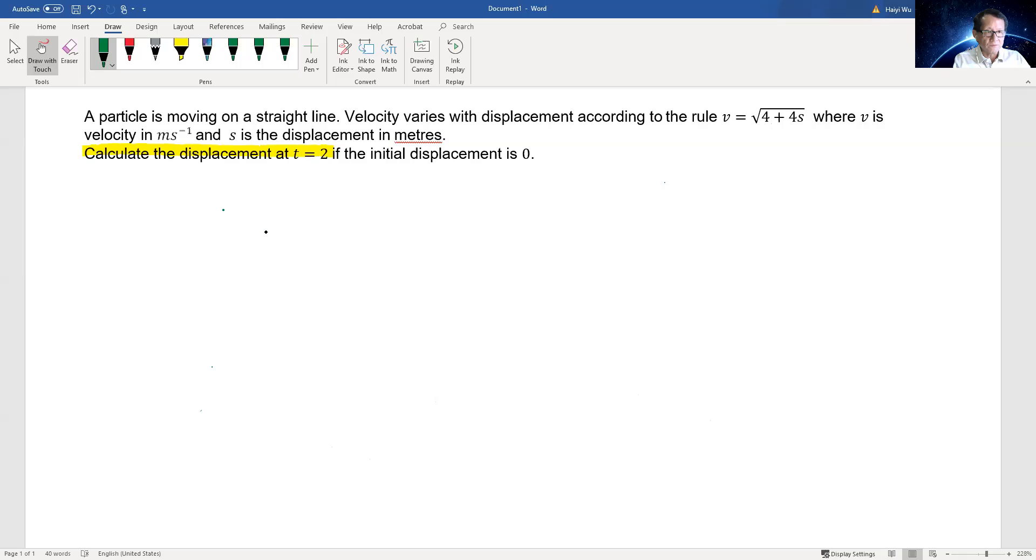We have a particle moving on a straight line. The velocity is expressed in this formula: v = √(4 + 4s), where s is displacement in meters. What we need to do is calculate the displacement when time equals 2 seconds.